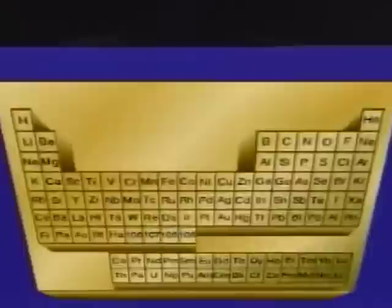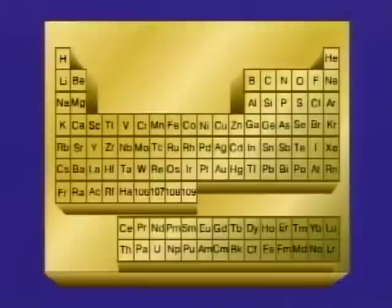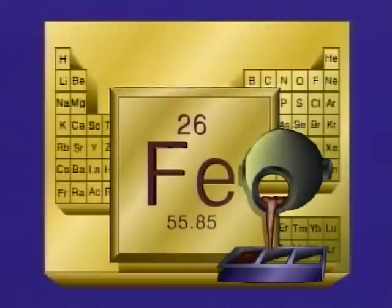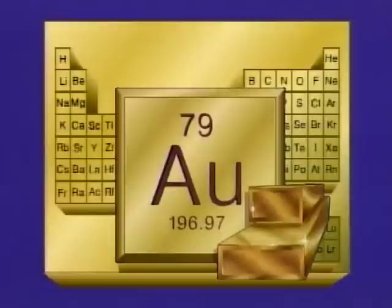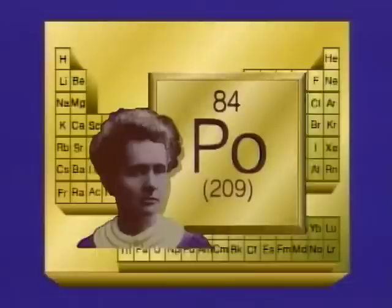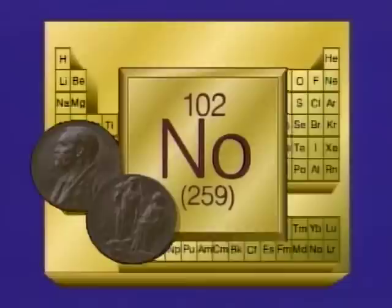There are 109 elements in the periodic table. 88 occur naturally; the other 21 are man-made or artificial. For centuries, Latin was the common language of science, so many elements have Latin names. For instance, iron was ferrum, so its abbreviation became Fe. Gold was aurum, Latin for shining dawn, so it became Au. Madame Curie discovered an element and named it after her native Poland — polonium. More recently discovered elements have been named after famous people, such as Einsteinium, named for Albert Einstein, and Nobelium, named for Alfred Nobel.